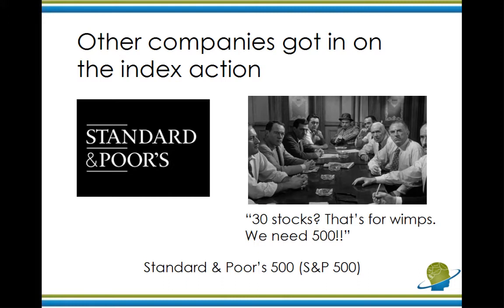This became more popular after the Second World War. For example, Standard & Poor's — a company that rates other companies and provides research — wanted to have an index so people would follow their index every day. They figured 30 stocks isn't enough, let's pick 500 stocks. So they came up with the Standard & Poor's 500, which we know as the S&P 500. Same thing just like the Dow — you can track the S&P, if it's up, probably the market is up, and so forth.